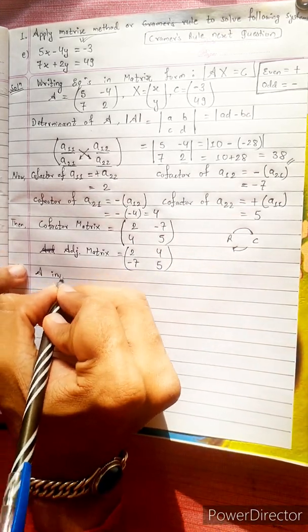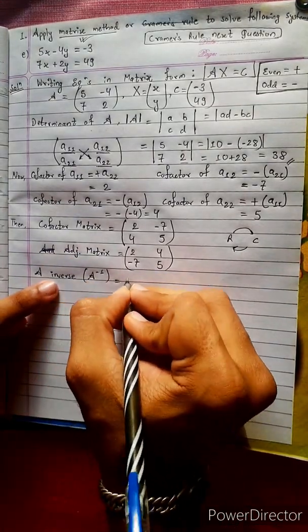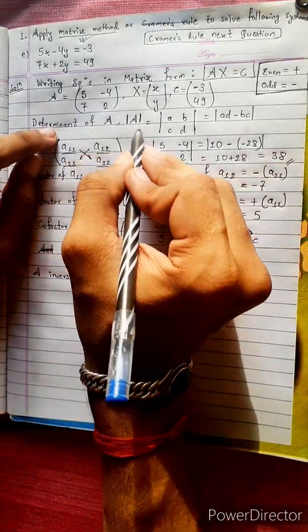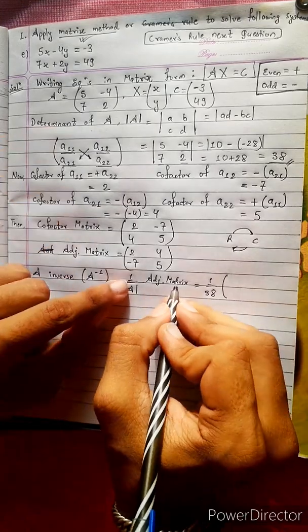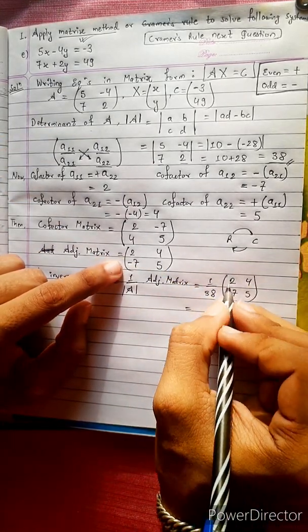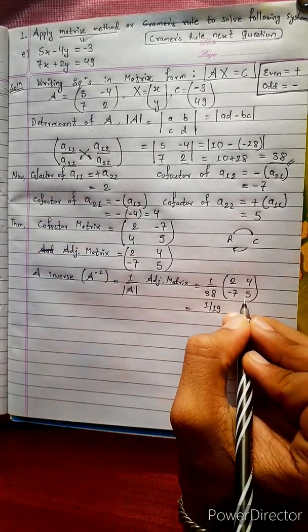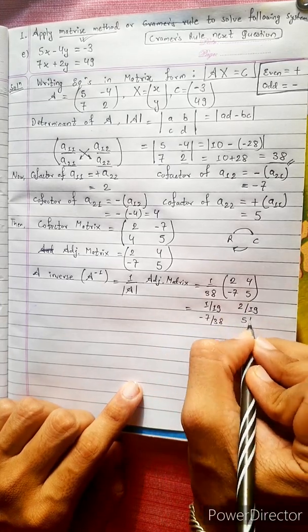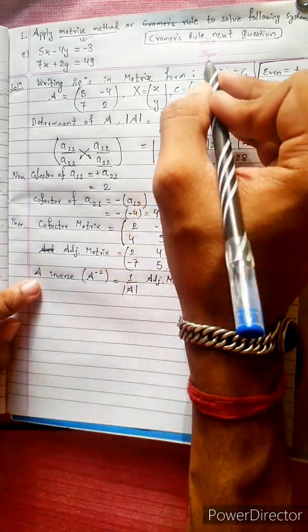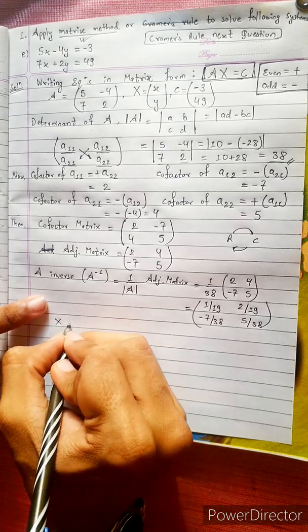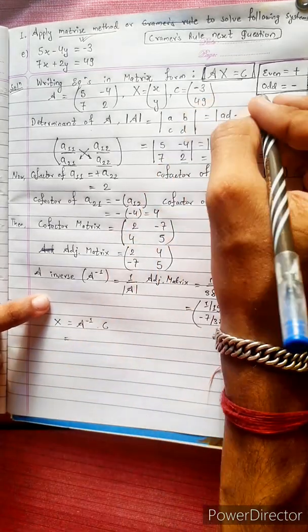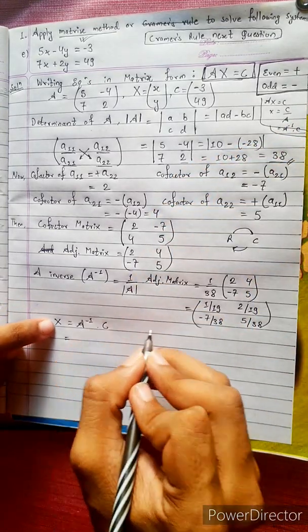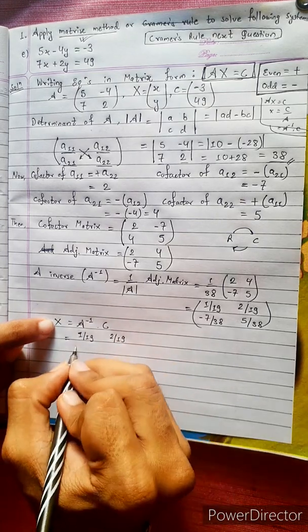The inverse formula is: A inverse equals (1 / determinant of A) times the adjoint matrix. The determinant is 38, so A inverse equals (1/38) times [2, 4; -7, 5]. This gives entries 2/19, 4/38, -7/38, 5/38. Then x equals A inverse times c.